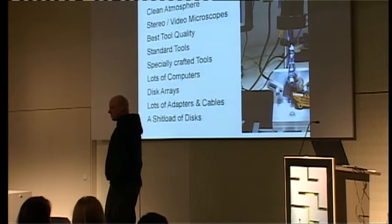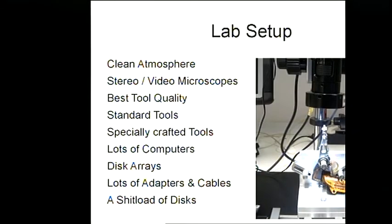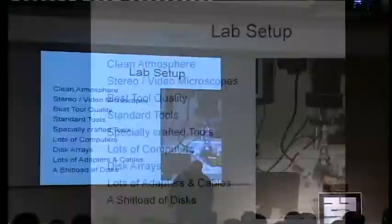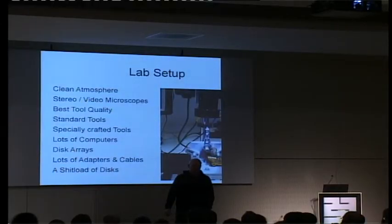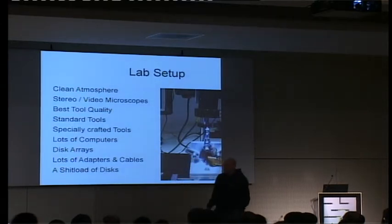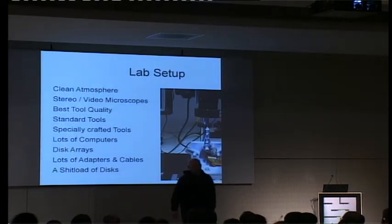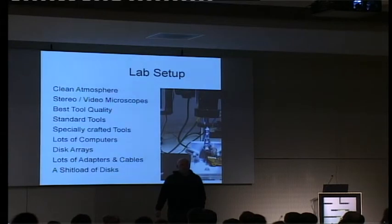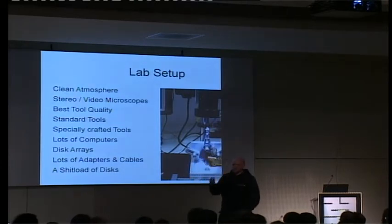What else do you need? Lots of computers. You need some disk arrays to store the images on and to store the final extracted data on. All kinds of adapters and cables. And a lot of disks, for two reasons: one is that in some cases you need one-to-one copies to physical disks, so you need a lot of disks. The second reason is spare parts. There are probably more than an estimated 10,000 drive models on the market — meaning these spare parts are not interchangeable between drives.